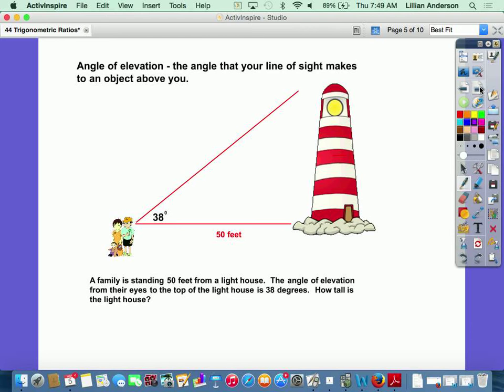And there are two terms that you guys need to be associated with when you are solving certain lengths. The first one is angle of elevation. The angle of elevation is the angle that your line of sight makes with an object above you. So look at this picture right here, you have a family that's standing 50 feet from a lighthouse.